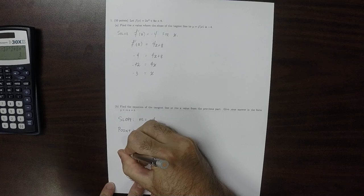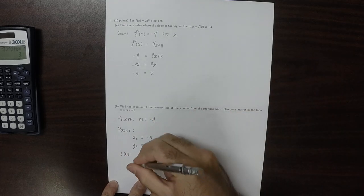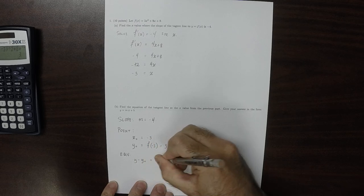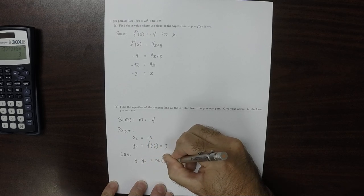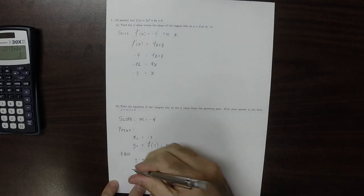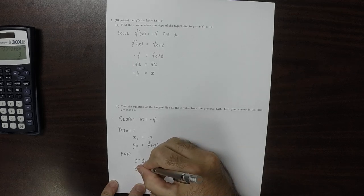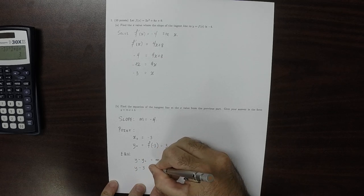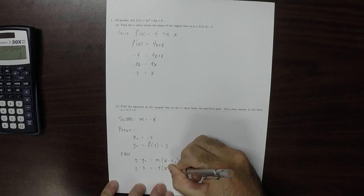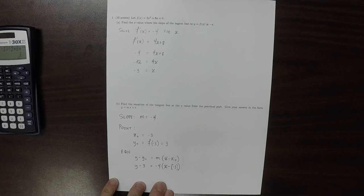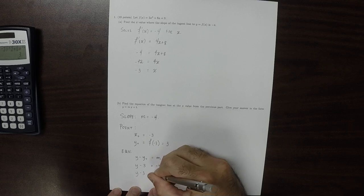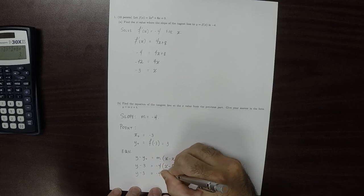So therefore the equation is y minus y0 is m multiplied by x minus x0. Now we just have to plug in all the things that we know. So y minus 3 is negative 4 times x minus negative 3. Simplifying this, y minus 3 is negative 4 times x plus 3.